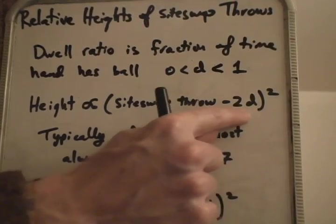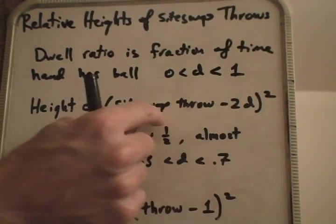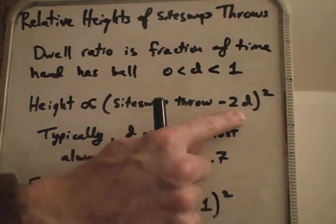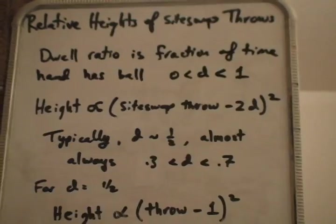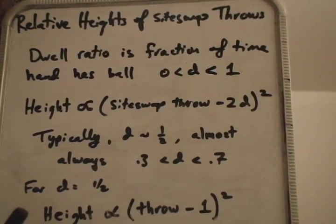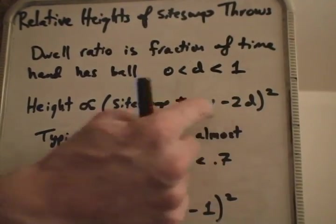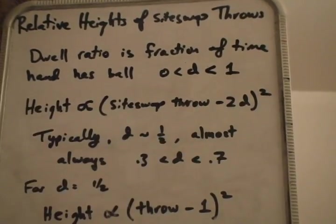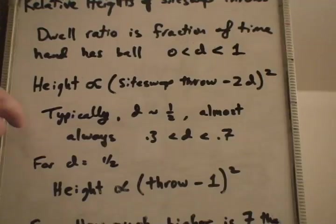The reason that the dwell ratio deducts from the siteswap throw value is because for whatever time a ball is in a hand, it doesn't have to be thrown up in the air to pass the time. So more dwell means the siteswap throw doesn't have to be as high to take the time.